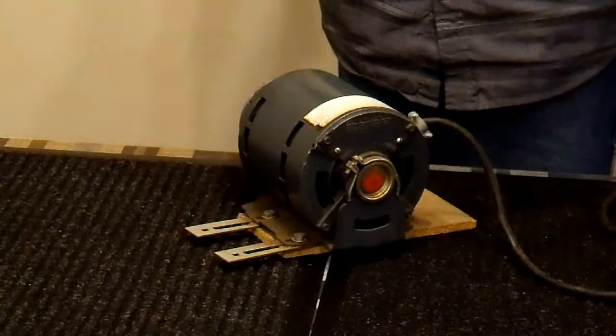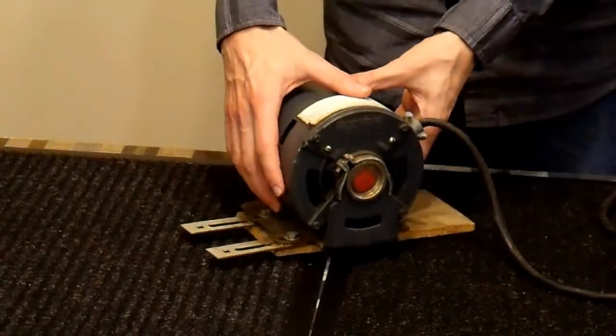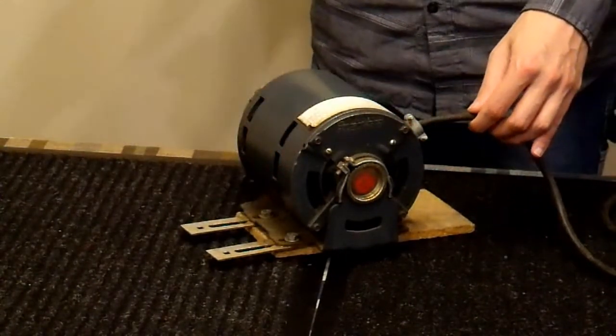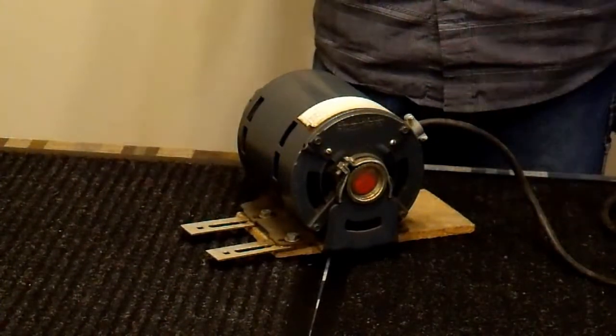But, back then, if you wanted to make a power converter, this was the way to do it. So, the most common application was AC power in, and DC power out. And, they called that a rotary converter, or simply a converter, for short.